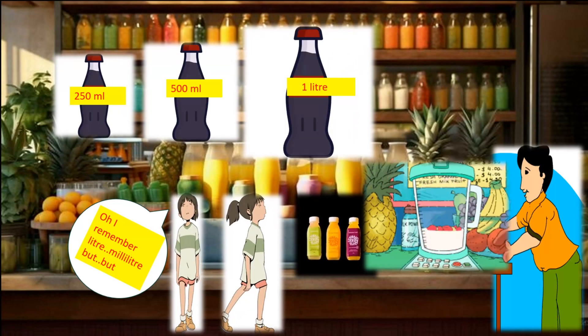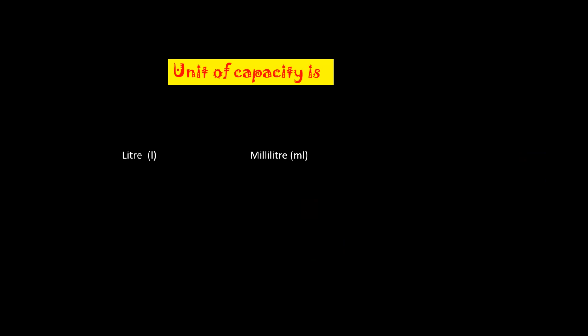So, unit of capacity is measured in litres and milliliter. In short form, you write litre as L and milliliter as ml. So, these are the unit of capacity.